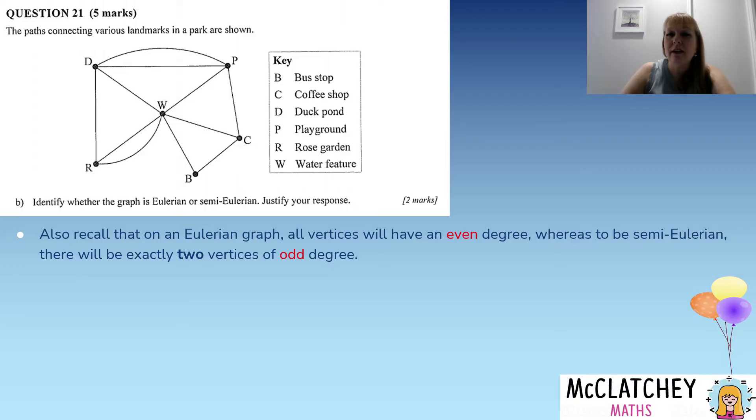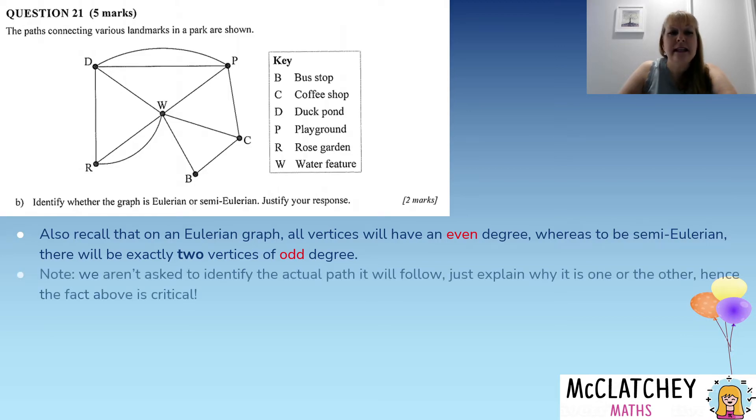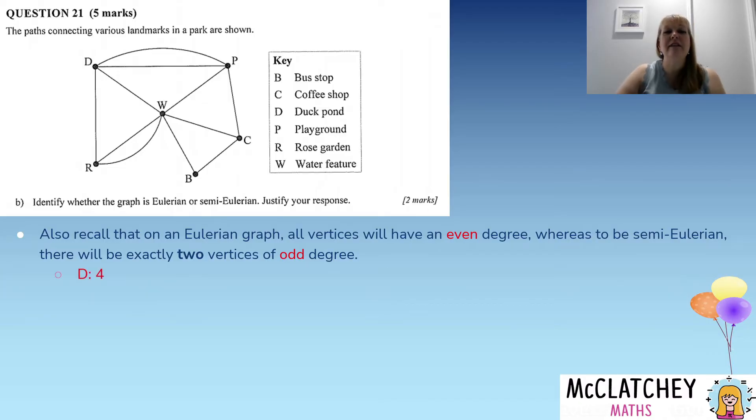So in order to come up with our justification, we need to look at each vertex and work out what the degree of each vertex is. Now do you remember what degrees are? How many paths are coming out of that vertex. So let's look at our graph and work out what that is. Now we're not actually being asked to identify the Eulerian path, just explain why it's one or the other. Hence, we need to know that key information. You could sit there and spend ages and ages and try and work it out with all different types of pathway mapping. Not necessary, okay.